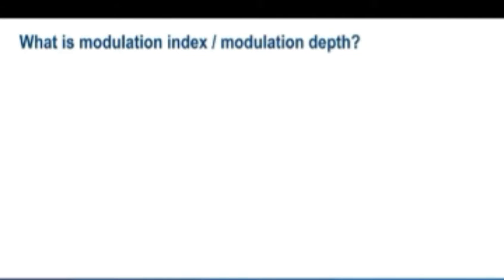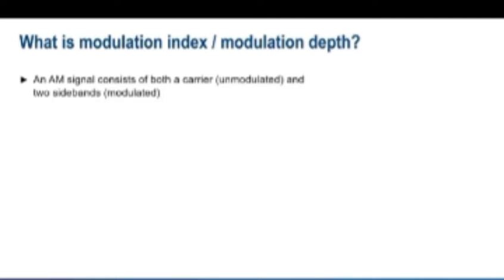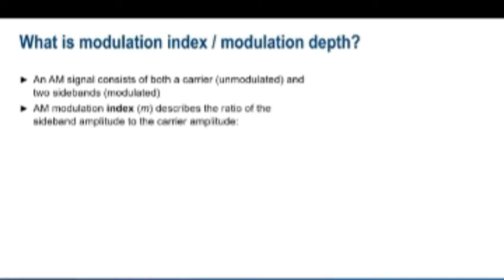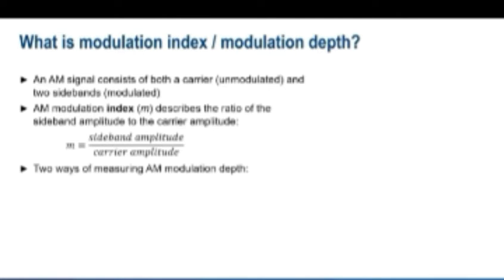As we have just seen, an AM signal consists of two parts: the unmodulated carrier and two modulated sidebands. The AM modulation index, in other words the index usually denoted with lowercase m, describes the ratio of carrier and sideband amplitude. In other words, m is the sideband amplitude divided by the carrier amplitude.